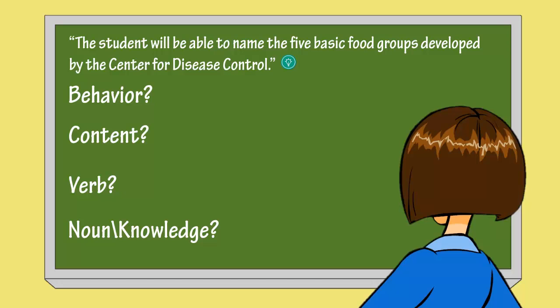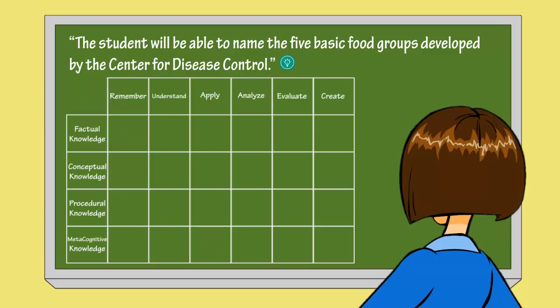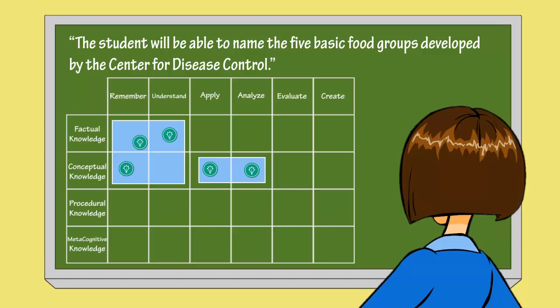Well, Ms. Williams might say yes to both of those questions. She might say that the behavior or verb is present in the word 'name' in the goal. Further, she may say the content or knowledge is present in the objective via the words 'five basic food groups.' That looks like a nice clean goal which Ms. Williams can put into the table. Perhaps she'll put it in the factual row of the table and the remember column of the table. If Ms. Williams is able to place all of her objectives into the table, she may start to see some patterns in her objectives and also might see ways that she can do similar types of instruction and activities for similar objectives.